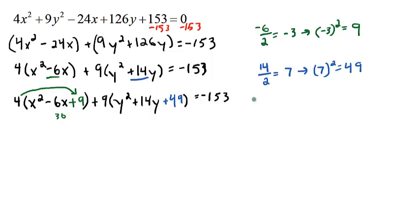Okay, so we want to add 36 to this side, and then the same thing with this 49. Yeah we added 49 to the part in parentheses, but we're multiplying everything in the parentheses by a 9, so actually we added in 9 times 49, which is a positive 441.